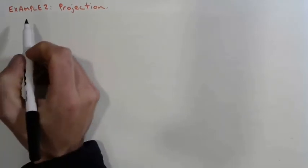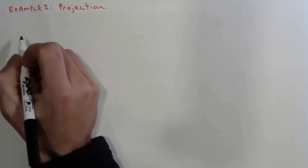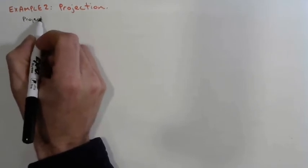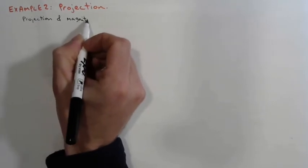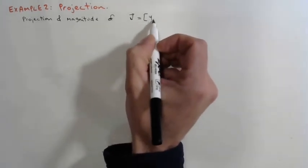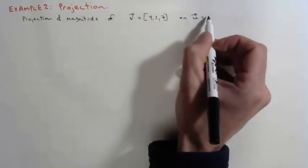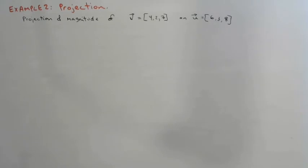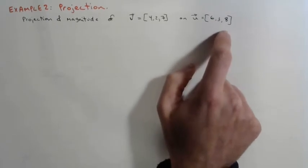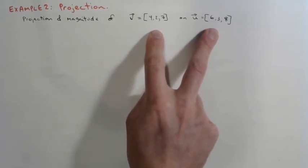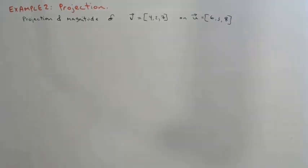Example 2 deals with a projection, which is an application of the dot product. We are going to determine the projection and its magnitude of vector V = (4, 2, 7) onto vector U = (6, 3, 8). We have two Cartesian vectors given in three-dimensional space, and this works very similarly to two-dimensional dot product using the exact same formula.